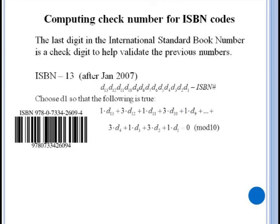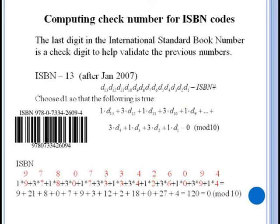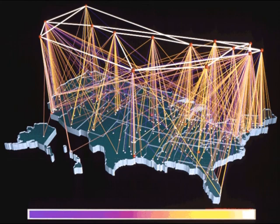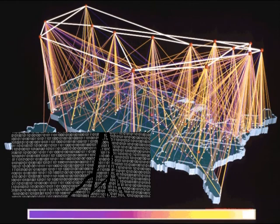After 2007 it became apparent they needed more numbers so they switched to a thirteen digit system. This time the last digit was chosen so that multiplying the digits by alternating ones and threes would add to zero mod ten. This idea of verifying data is used heavily in electronic data communication where packets of data are checked to make sure that there was no corruption during transmission by electronic interference or possibly malicious manipulation. If an error is detected then the packet can be resent.